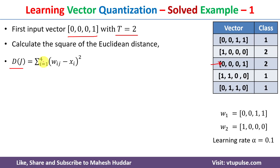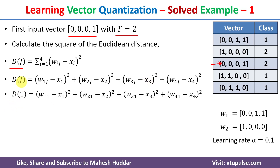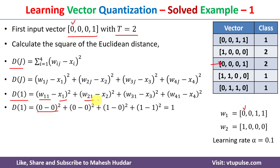Setting j=1, we calculate d1 — the Euclidean distance from the input vector to the first cluster. Substituting the values: w11=0, x1=0; w21=0, x2=0; and filling in the remaining components similarly. Solving gives d1 = 1.